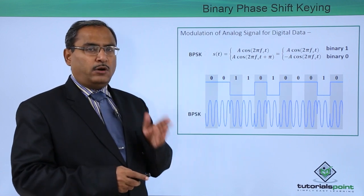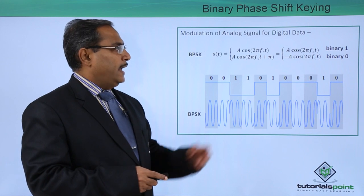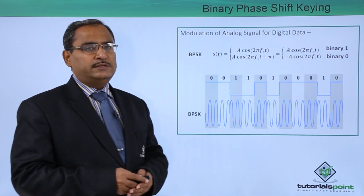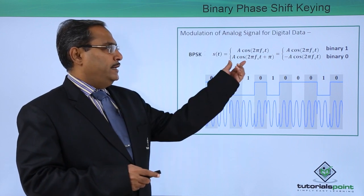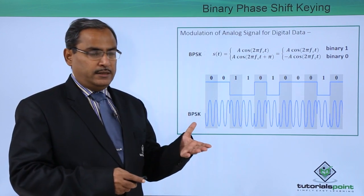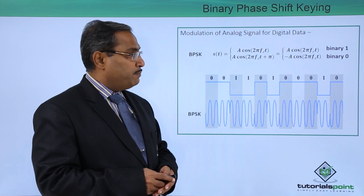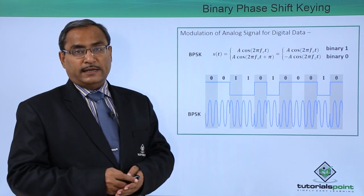For binary one, it is A cos 2π fct, where fc stands for the carrier frequency and A stands for the amplitude. But for binary 0, it is A cos 2π fct plus π. So we can express it in the form that is minus A cos 2π fct.